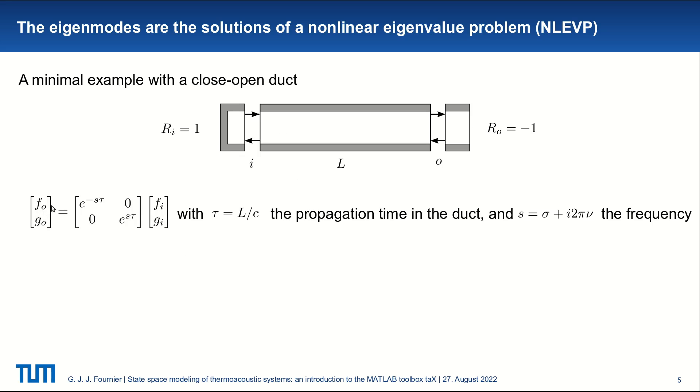And if we look at the F and G waves propagating in this system, from the inlet to the outlet they are related as follows. With tau, which is L over c, the propagation time it takes for the wave to travel in the duct. And s is the complex frequency with growth rate and angular frequency. So we have this exponential term that relates the phase change when traveling along the duct.